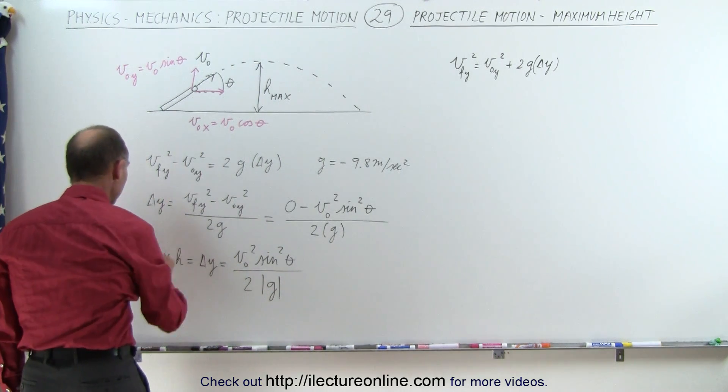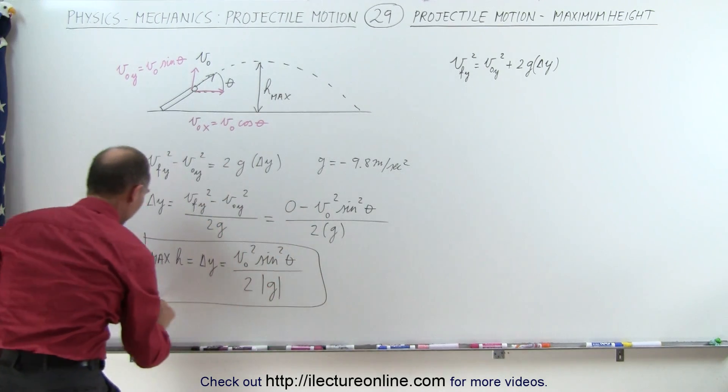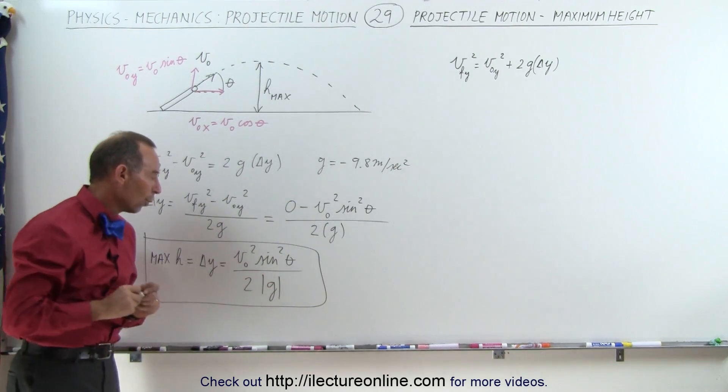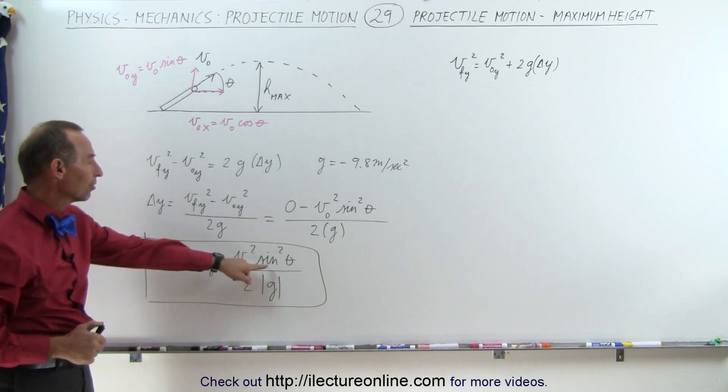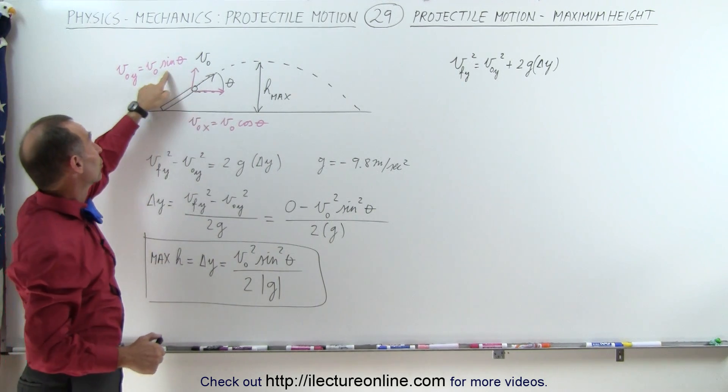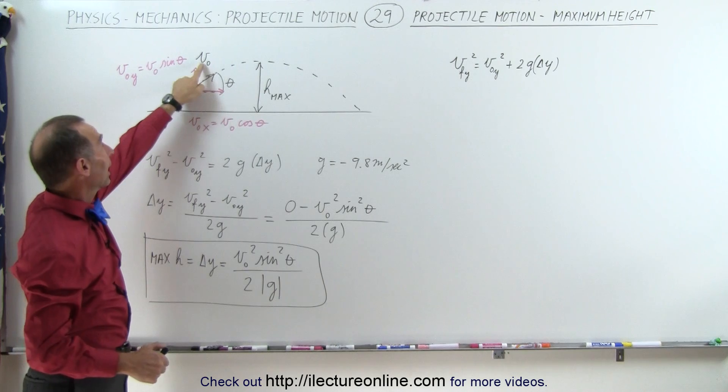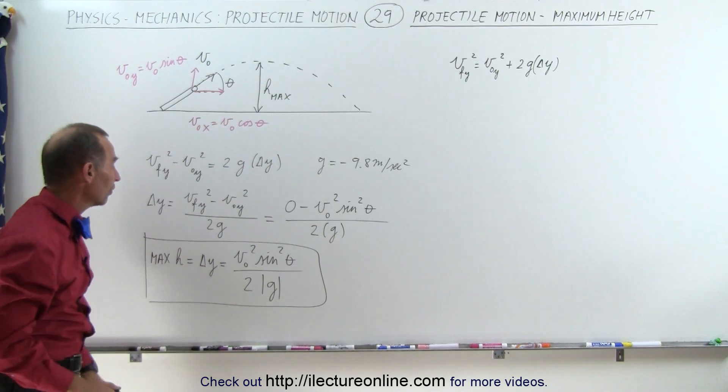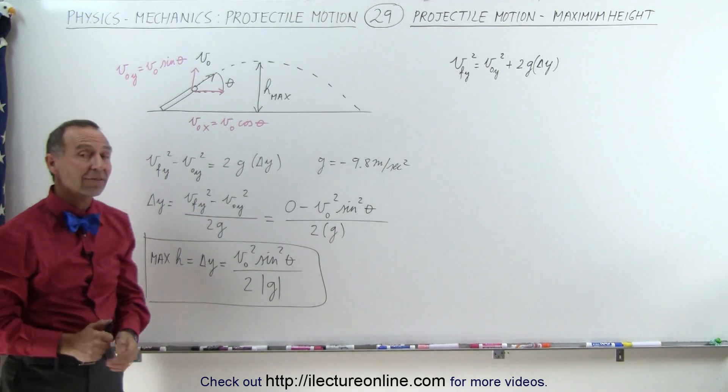At that point, I have an equation now, that tells me, for any projectile fired from the ground, what the maximum height attained is, simply by knowing its initial velocity, in terms of the angle theta, and the component of the initial velocity, v sub nought. And that's how it's done.